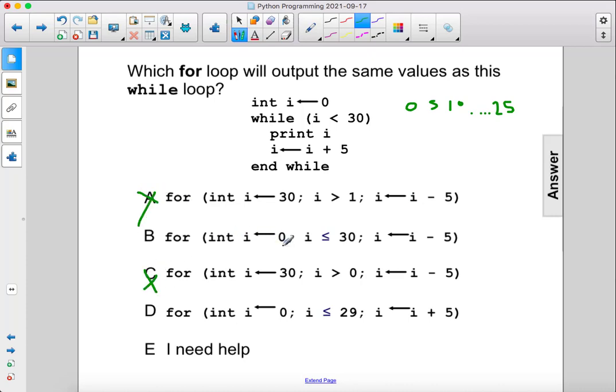We want to begin at 0, and we don't want to include 30. Oh look, so this is starting at 0 and then decreasing, which will go to negative 5. So we don't want B.